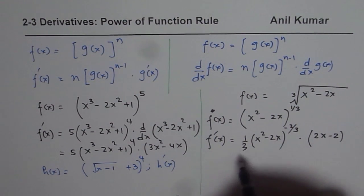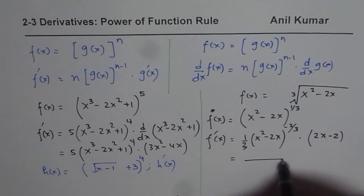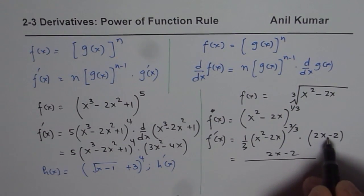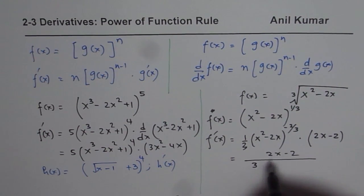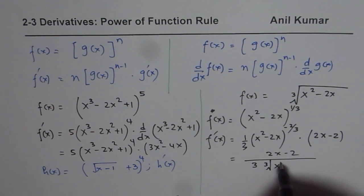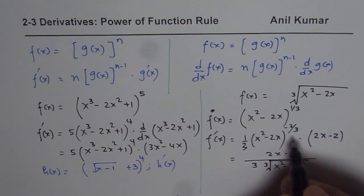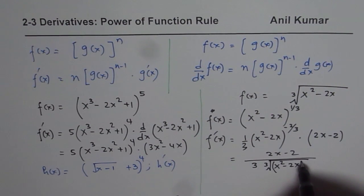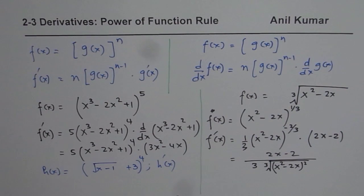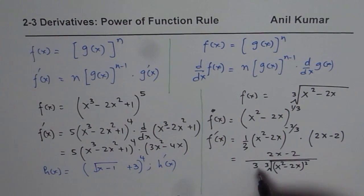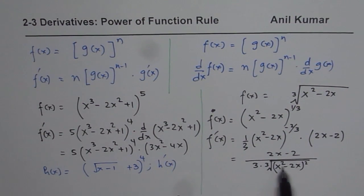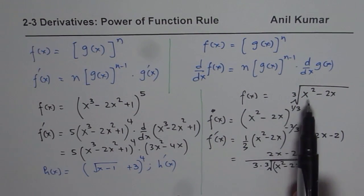Writing this in a cleaner form, we could write 2x minus 2 in the numerator, with 3 and the cube root of x squared minus 2x, whole squared, in the denominator. So that is another way of writing your solution, and this is the solution of the given function.